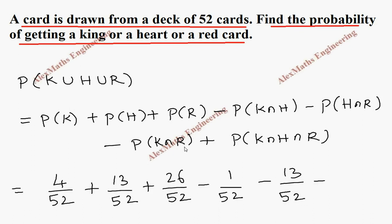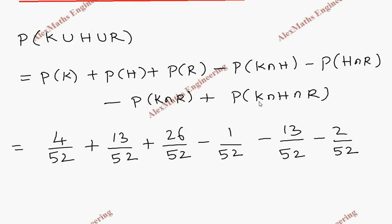And king and red, in red there are 2 kings. One is heart and other is diamond. So 2 by 52. And intersection of all, that is king, heart and red, that will be only 1 because there is 1 heart which is king and that is also red. 1 by 52.